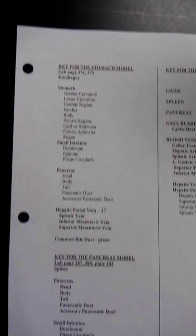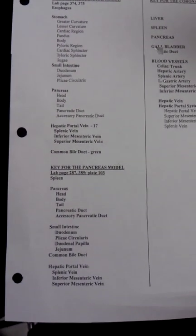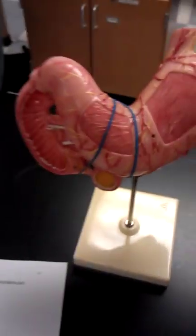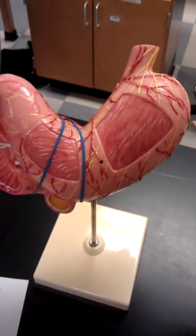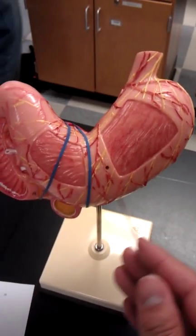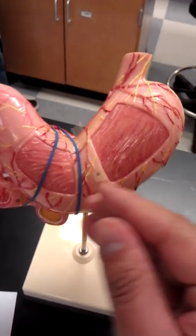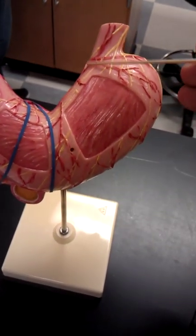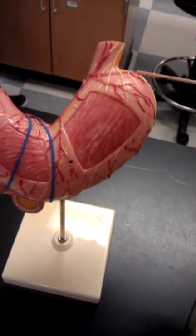This is the key for the stomach model and the pancreas model. I'm going to go through them. We'll start off with the stomach. This is the stomach right here. Greater curvature, lesser curvature, cardiac region, and the fundus is this.